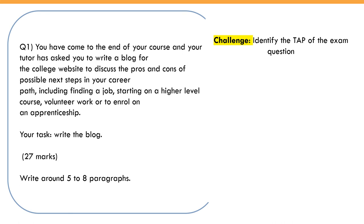The question reads: you have come to the end of your course and your tutor has asked you to write a blog for the college website to discuss the pros and cons of possible next steps in your career — including finding a job, starting a higher level course, volunteer work, or enrolling in an apprenticeship. Your task is to write the blog. This is worth 27 marks, with the advisory guidance to write around five to eight paragraphs.